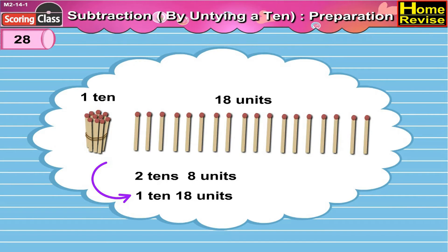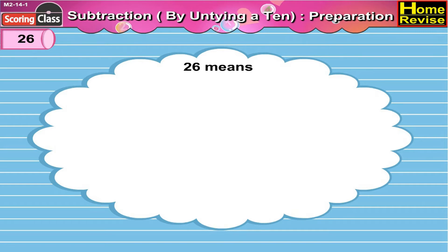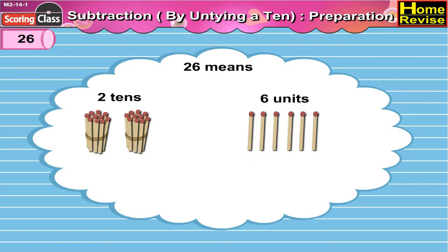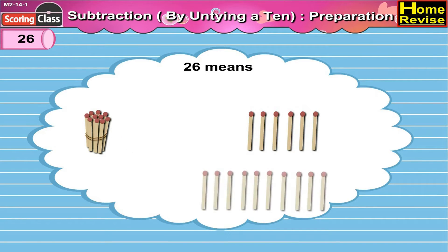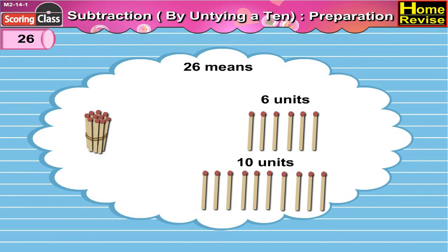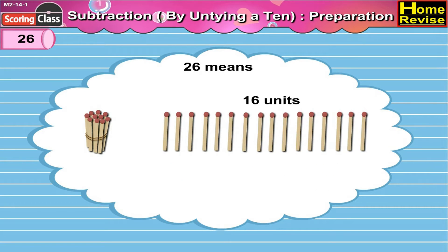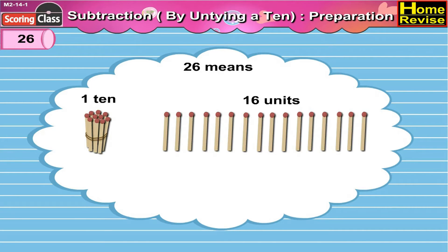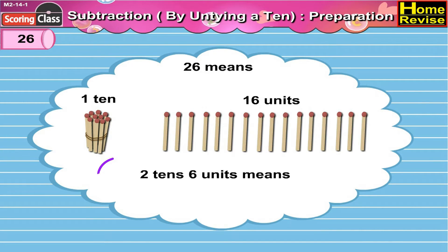Twenty-six means two tens, six units. If we untie one ten, we'll get ten units. Ten units and six units would be sixteen units. So now we have one ten, sixteen units. Two tens, six units means one ten, sixteen units.